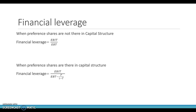How do we calculate financial leverage? There are two situations: when preference shares are not there in the capital structure, and when preference shares are there. In the first case, financial leverage is computed using the formula: earnings before interest and taxes divided by earnings before tax. When preference shares are present, the formula is: EBIT divided by (earnings before tax minus preference dividend divided by 1 minus tax rate).